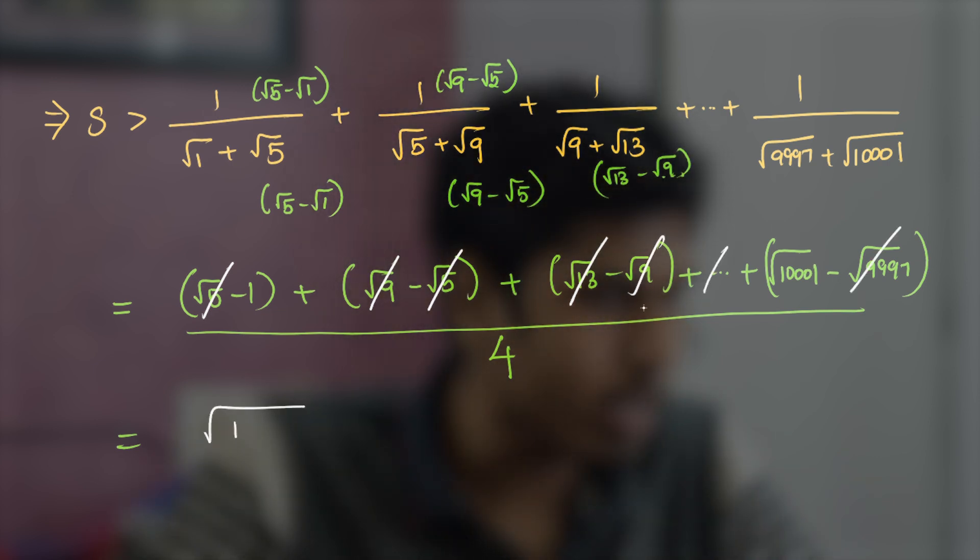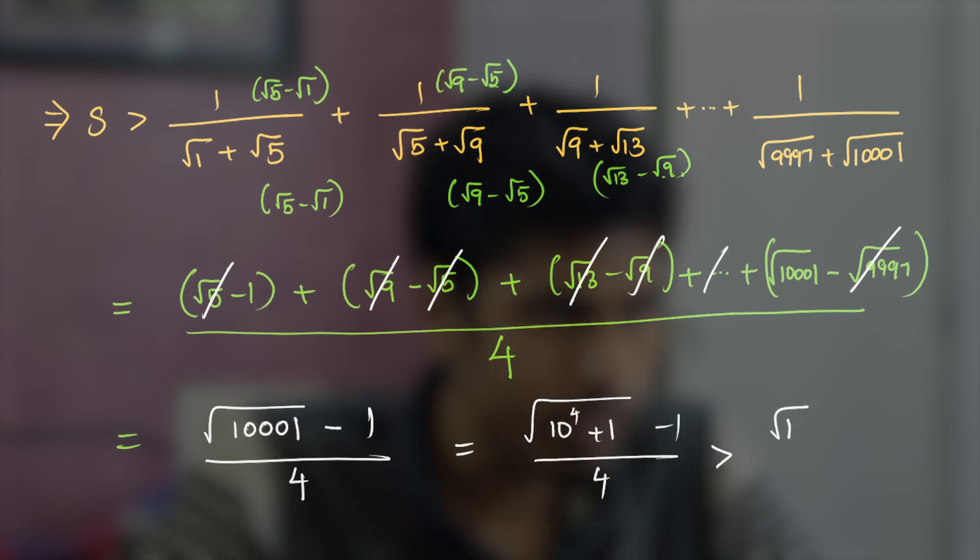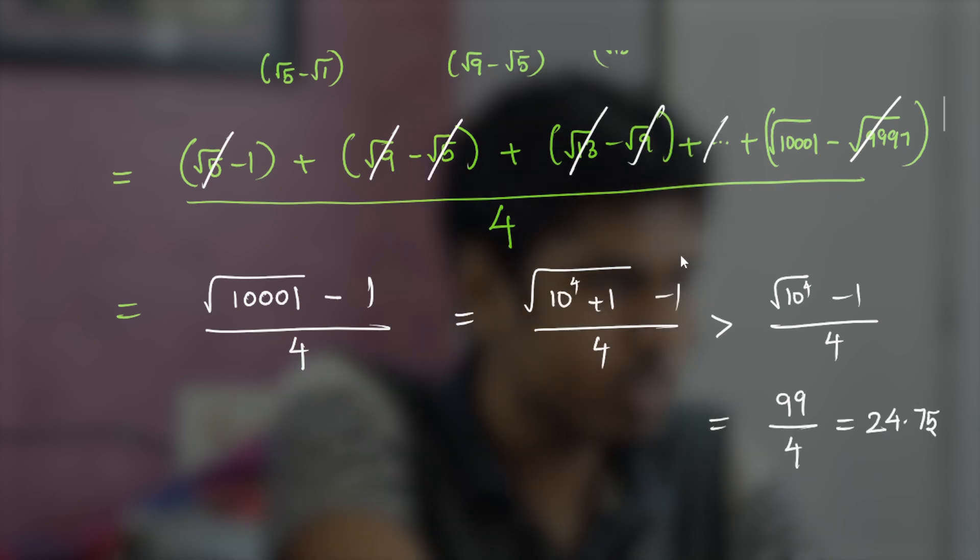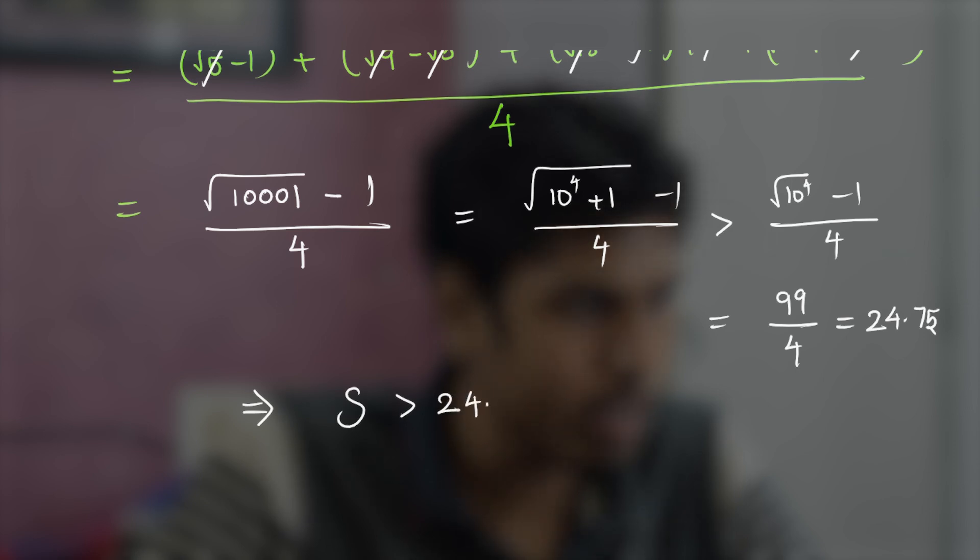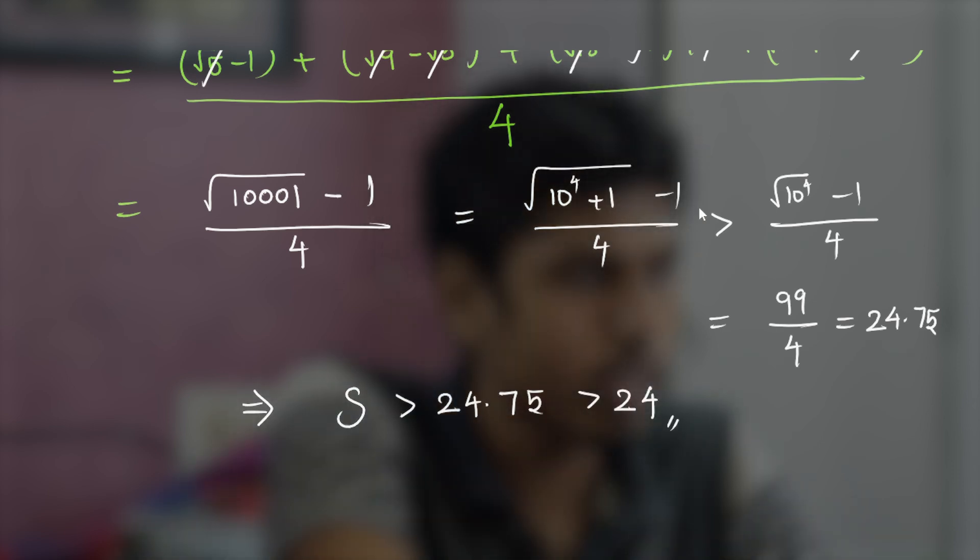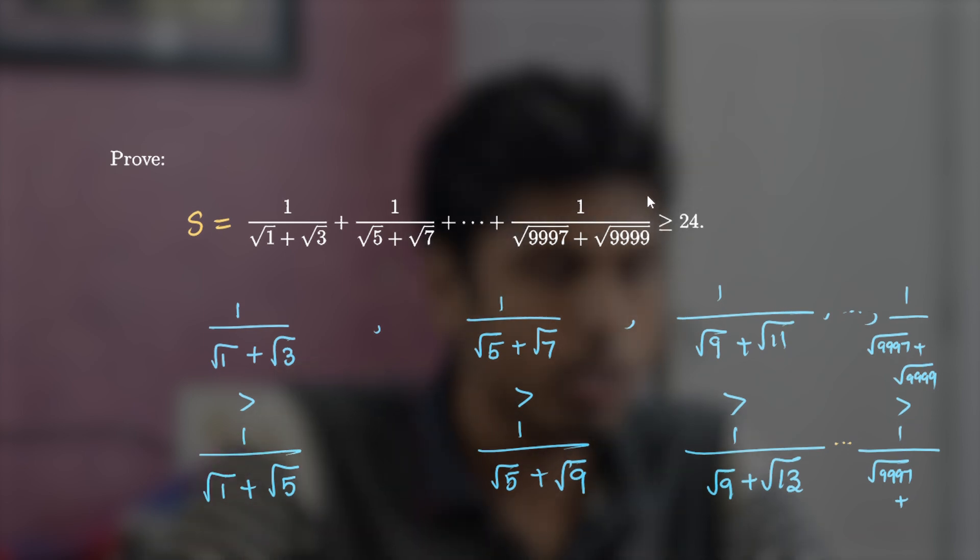You can clearly see a telescoping series here. The terms get cancelled with subsequent terms and the number that remains would be under root 10001 minus 1 upon 4. This is nothing but root of 10 power 4 plus 1 minus 1 by 4, which is clearly greater than root of 10 power 4 minus 1 by 4. This equals 99 upon 4, which is 24.75, thus we get S to be greater than 24.75, which of course is greater than 24 and thus it proves the question.